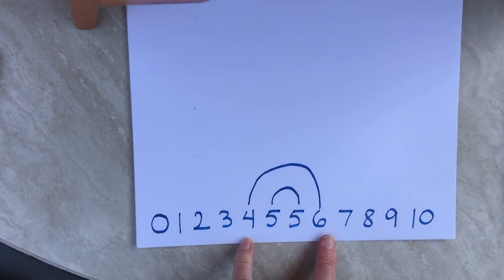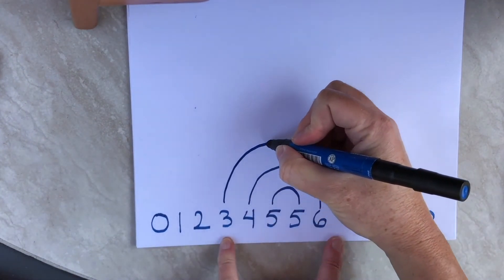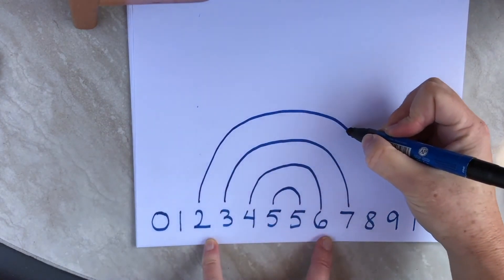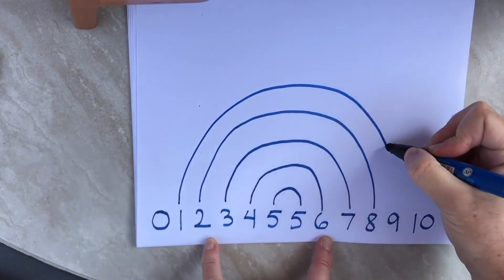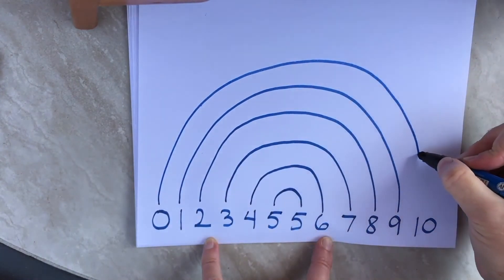What are other numbers that add up to ten? Seven and three make ten. Eight and two make ten. Nine and one make ten. And zero and ten make ten.